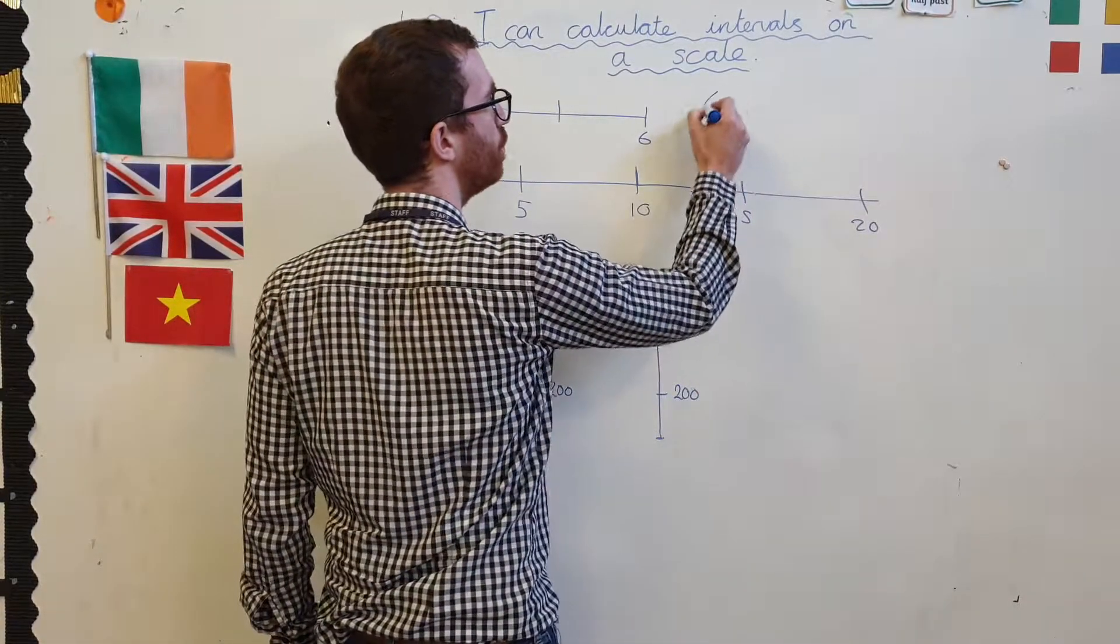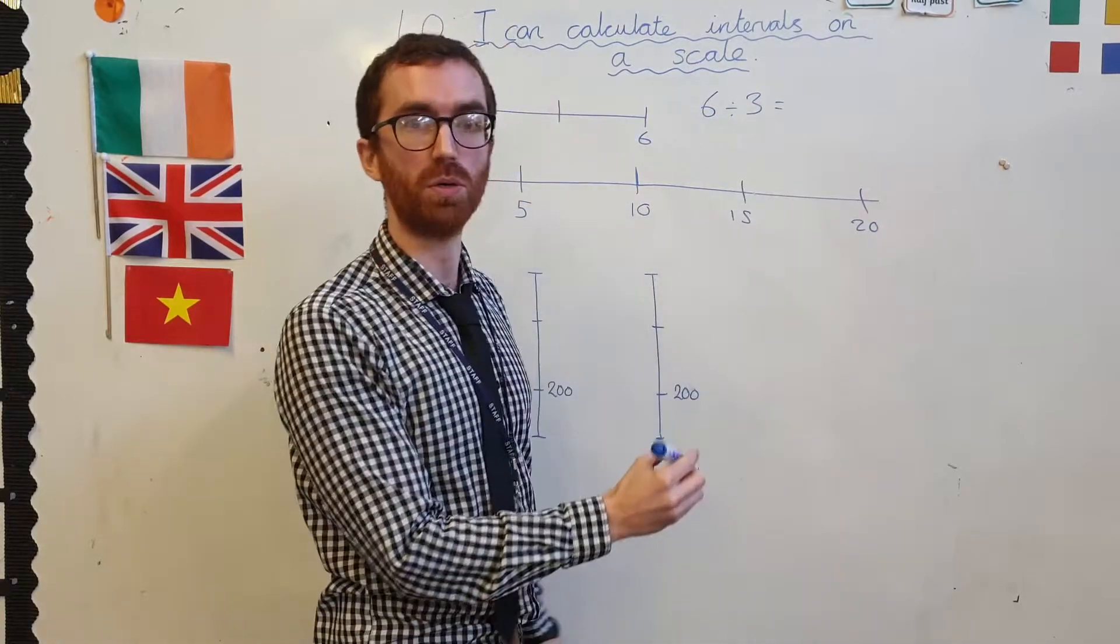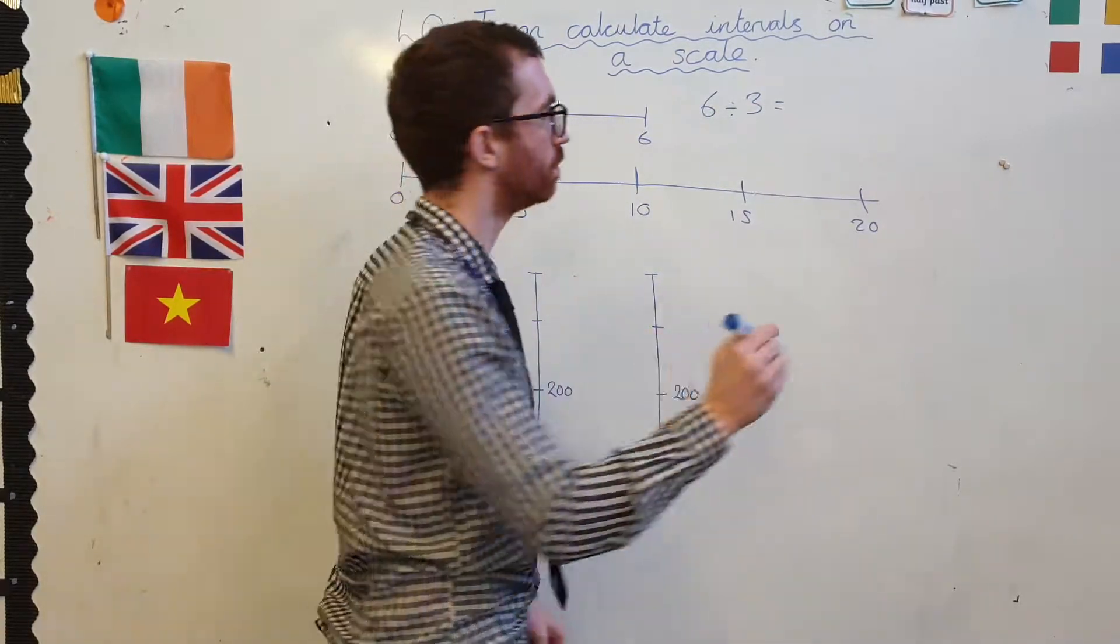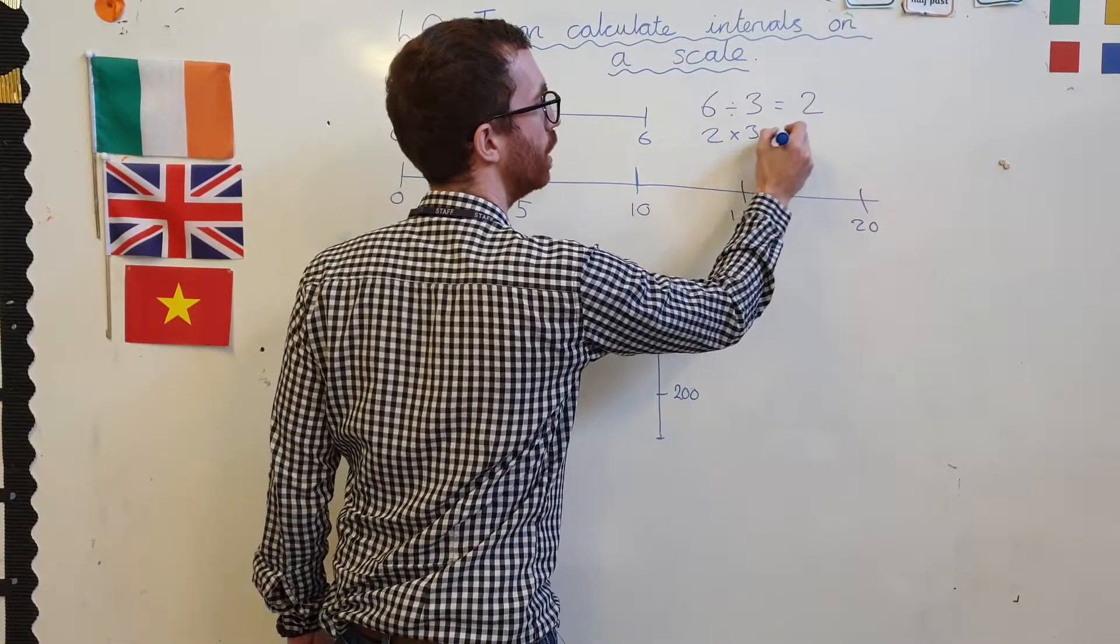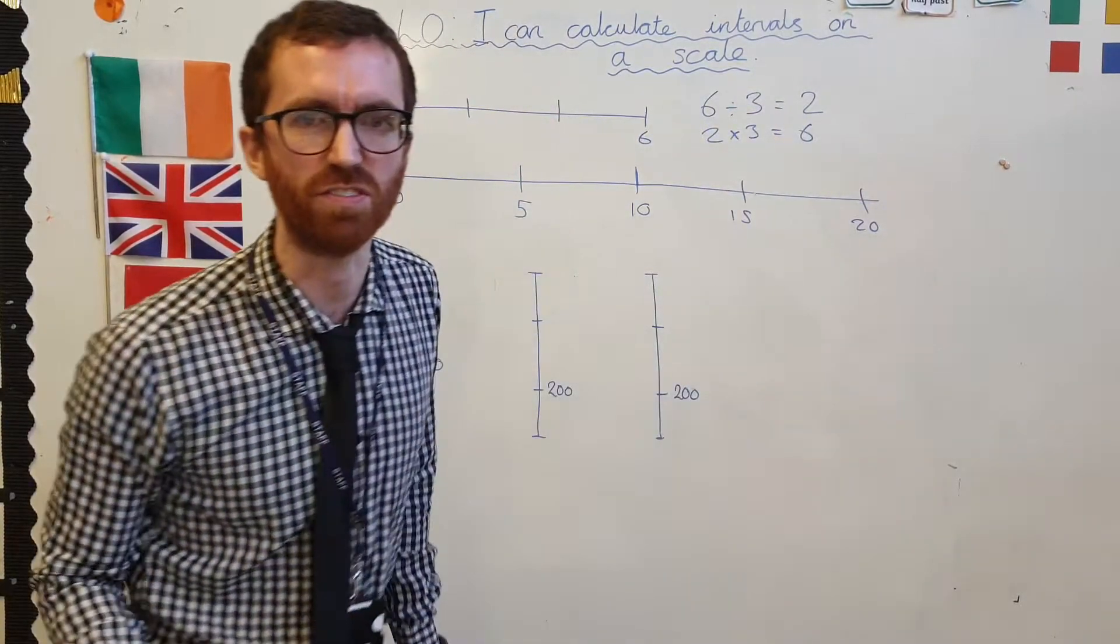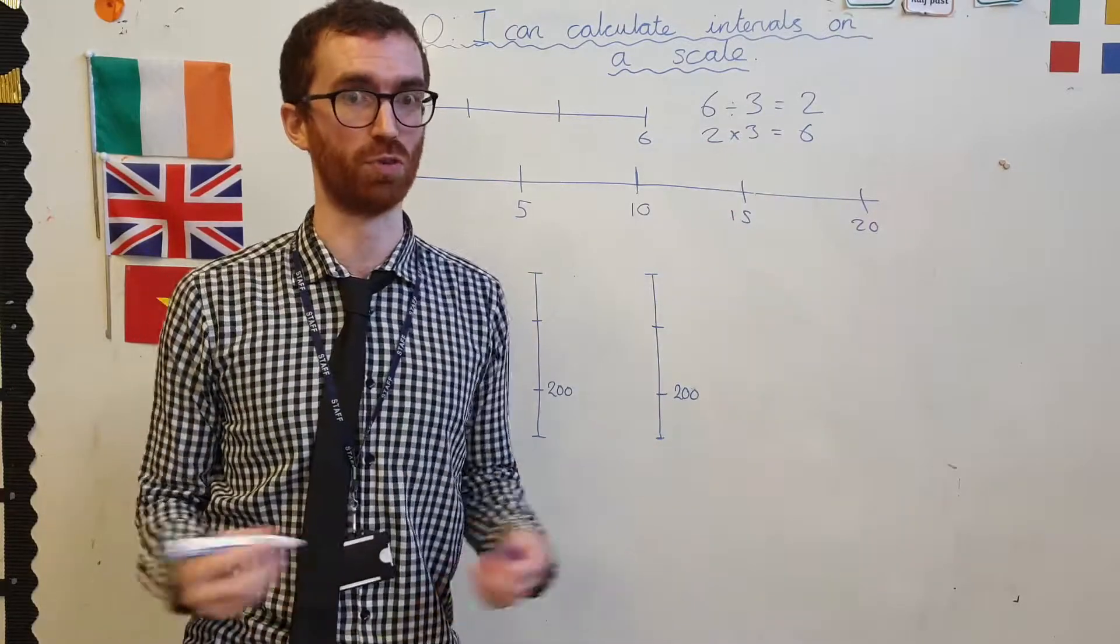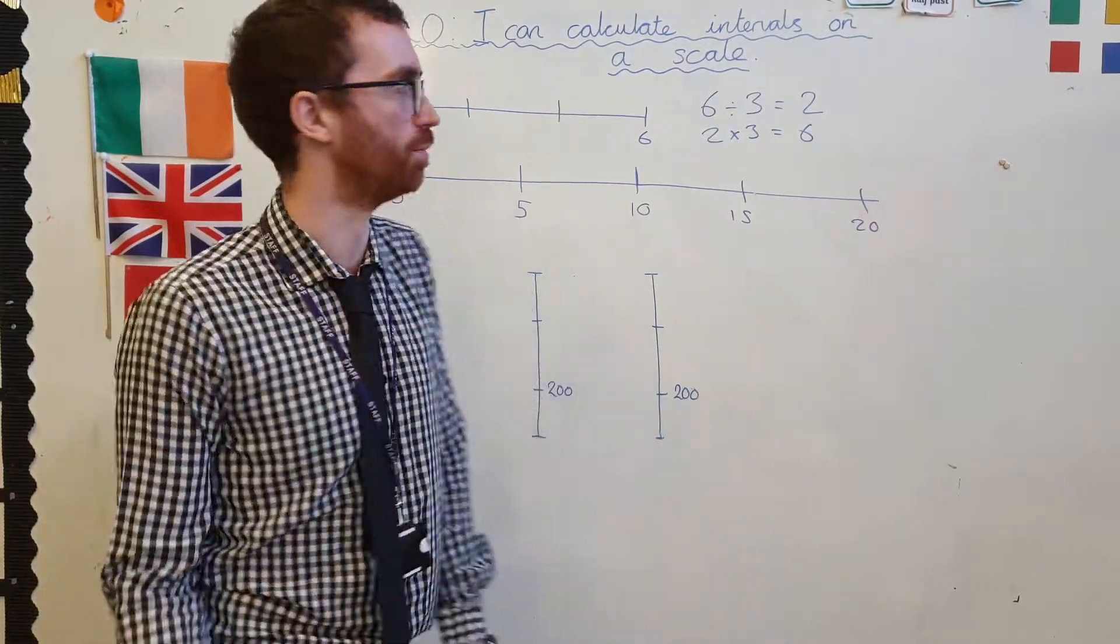I need to somehow share 6 into 3 equal groups. I could go 6 divided by 3, which equals, pause, 2, because I know that 2 times 3 equals 6. Use the inverse to help me. If I'm saying 6 divided by 3, I'm saying 3 times what equals 6? 3 times 2.